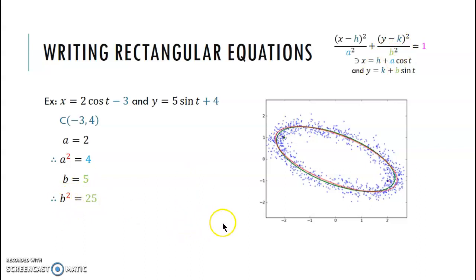So we plug in as we have it and we get that x plus three squared over four plus y minus four squared over 25 is equal to one.